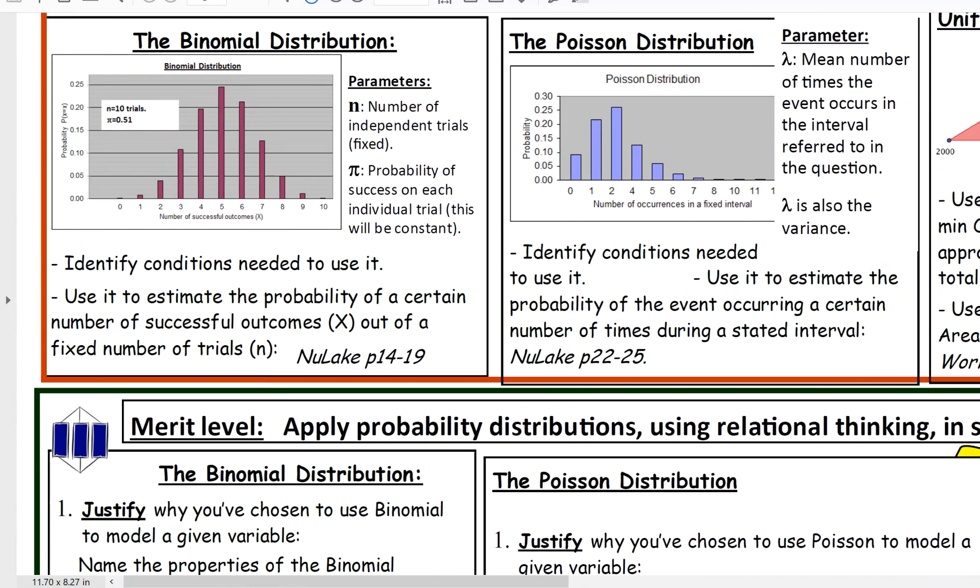Let's have a look at how we can tell which one it is. With binomial, it's used to estimate the probability of a certain number of successful outcomes out of a fixed number of trials.